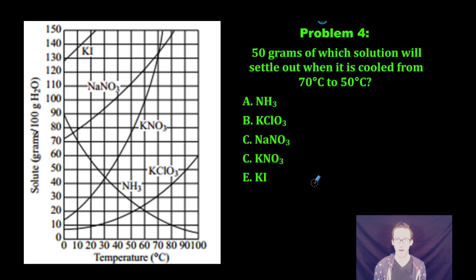Problem number four: 50 grams of which solution will settle out when it is cooled from 70 degrees Celsius to 50 degrees Celsius? So I'm going from 70 to 50. As I take a look at potassium chlorate, at 70 degrees Celsius I would have had about 30 grams dissolved. If I cool it down to 50 degrees Celsius, I could only dissolve about 20 grams. So about 10 grams would settle out of solution.